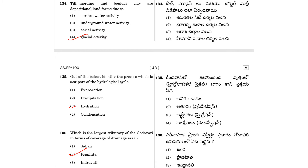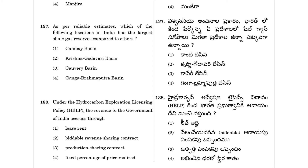Question 137: As per reliable estimates, which of the following locations in India has the largest shale gas reserves? The answer is the Krishna Godavari basin. So 137, answer is option 2.